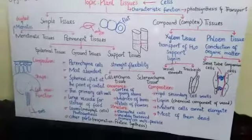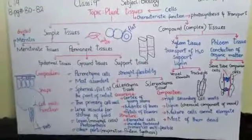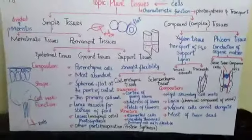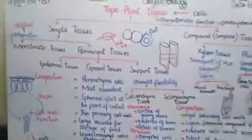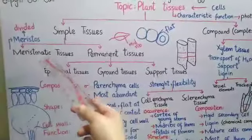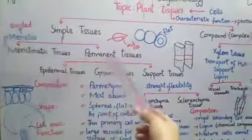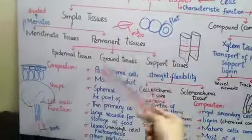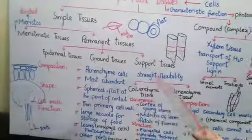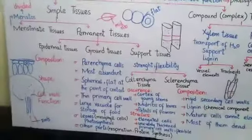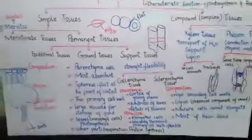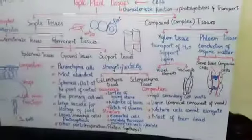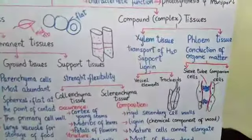Okay students, you know that we have discussed simple tissue in plant tissue. Today we have discussed two types of permanent tissue: ground tissue and sport tissue. Now we will discuss the next type, which is compound tissue.